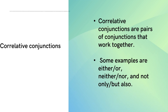The second type of conjunctions are correlative conjunctions. As the name itself suggests, they are relating words. Correlative conjunctions are pairs of conjunctions that work together. Examples for correlative conjunctions are: either/or, neither/nor, and not only/but also. So two words are always present in these conjunctions.